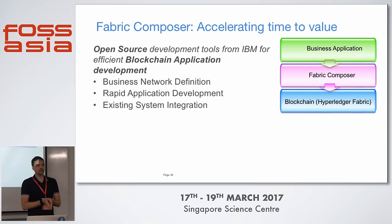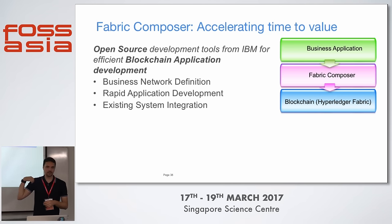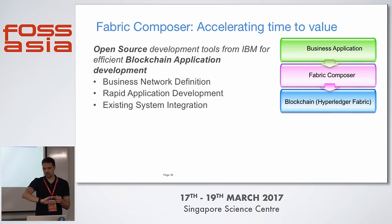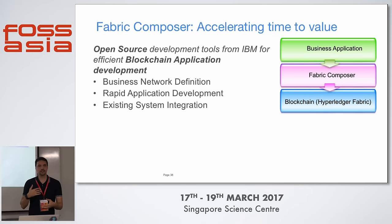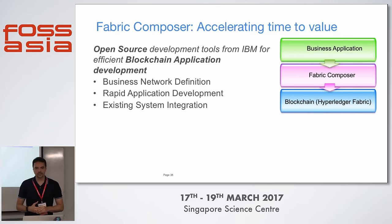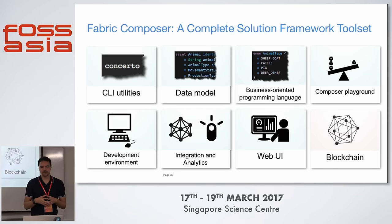Last but not least is Fabric Composer, currently in version 3. It's not part of the 1.0 release — the current version works with 0.6 — but it's a new tool that IBM contributes to the Hyperledger project. It's meant to simplify the development of blockchain applications. Right now you need to create chain code, deploy it, then create a client-side application in Node.js or another programming language. There are lots of manual steps and you need to keep everything in sync. With Composer, we get tools that help develop things much faster.